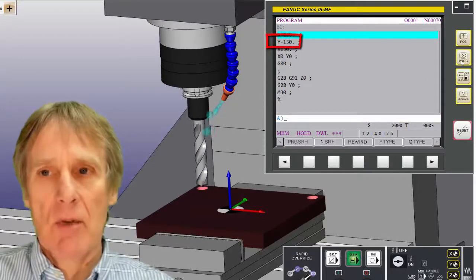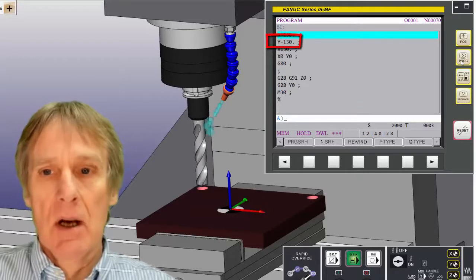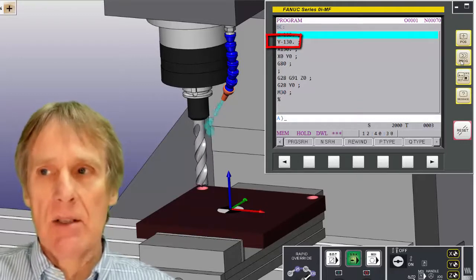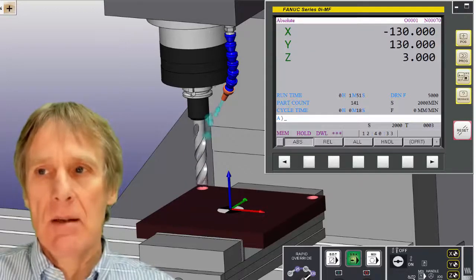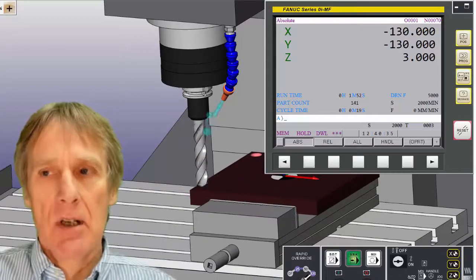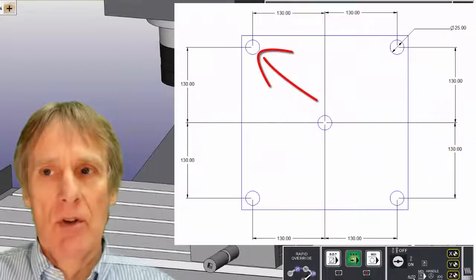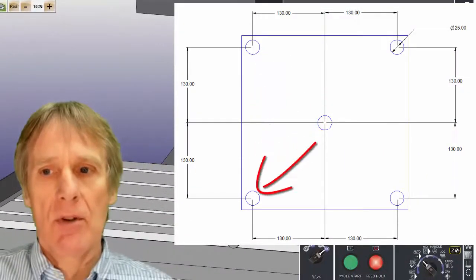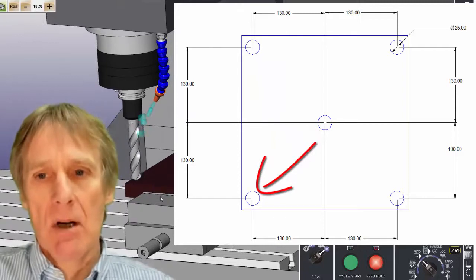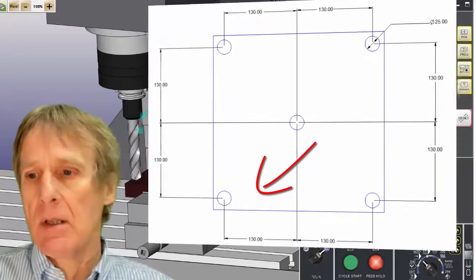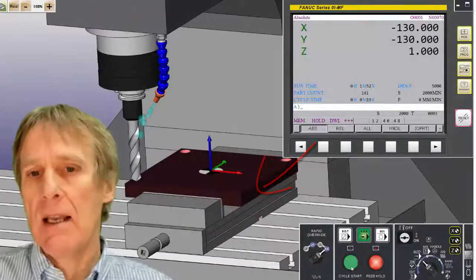And then if I look at my program again, now I'm telling it to go to minus 130 in Y, and I'm not repeating the X, so my X will stay. If I show it on the position display, you'll see that my X stays in position and my Y moves to this 130. So now I'm at minus 130 minus 130, because I'm in that minus area on the minus side of this datum. So I'm now going to drill a hole there.